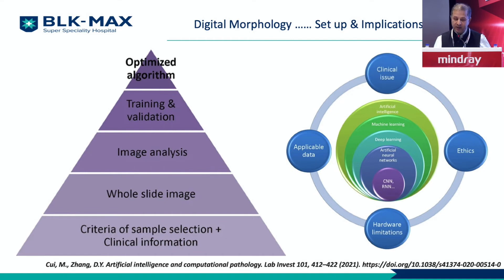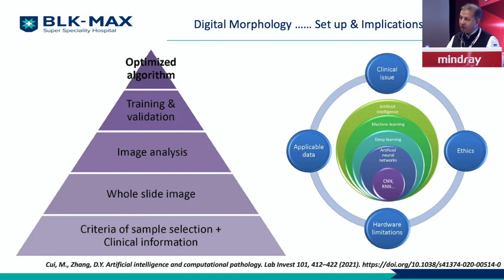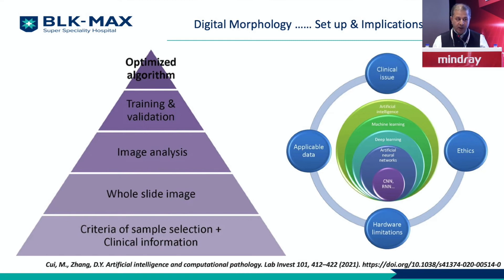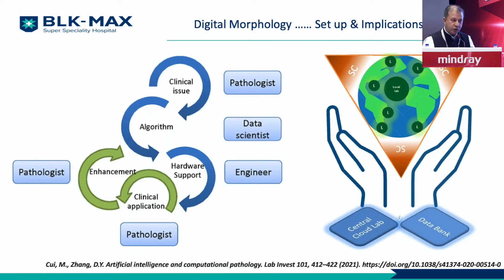When we talk about digital morphology setup and its implications, a few things to remember: how do we select what goes on digital morphology? You can't put all 400 samples from a lab onto digital morphology — you'll have to be selective. Do you want a whole mount image or selected areas? Currently, majority of digital platforms for hematology look at selected areas rather than the entire whole slide image. Training, validation, and optimization need to be done, and most importantly, you need clinical correlation. The algorithms need to be defined, inter-variability between pathologists needs to be looked at, and there's the possibility of getting second opinions.